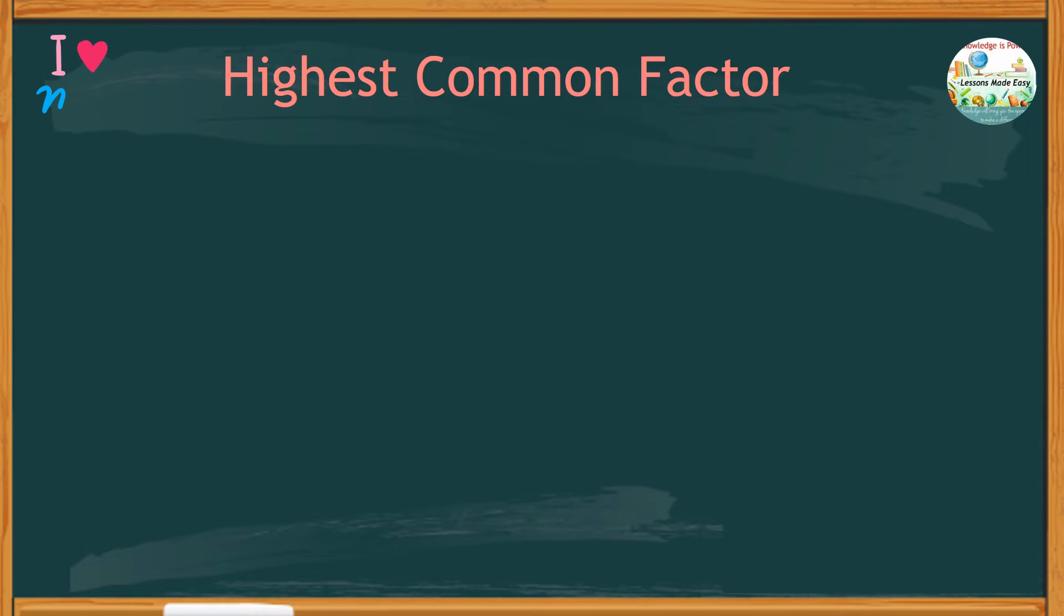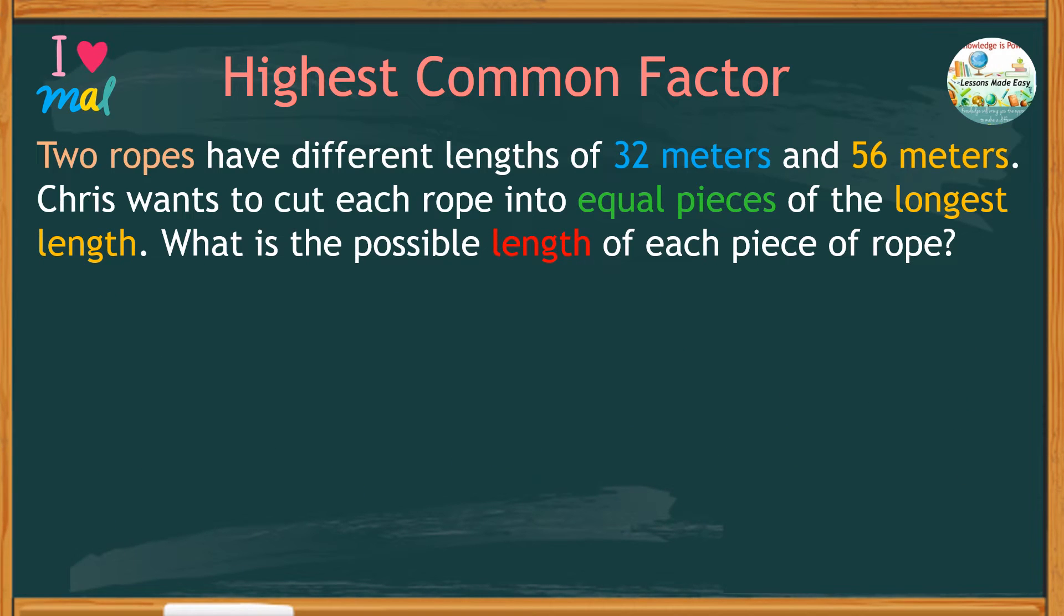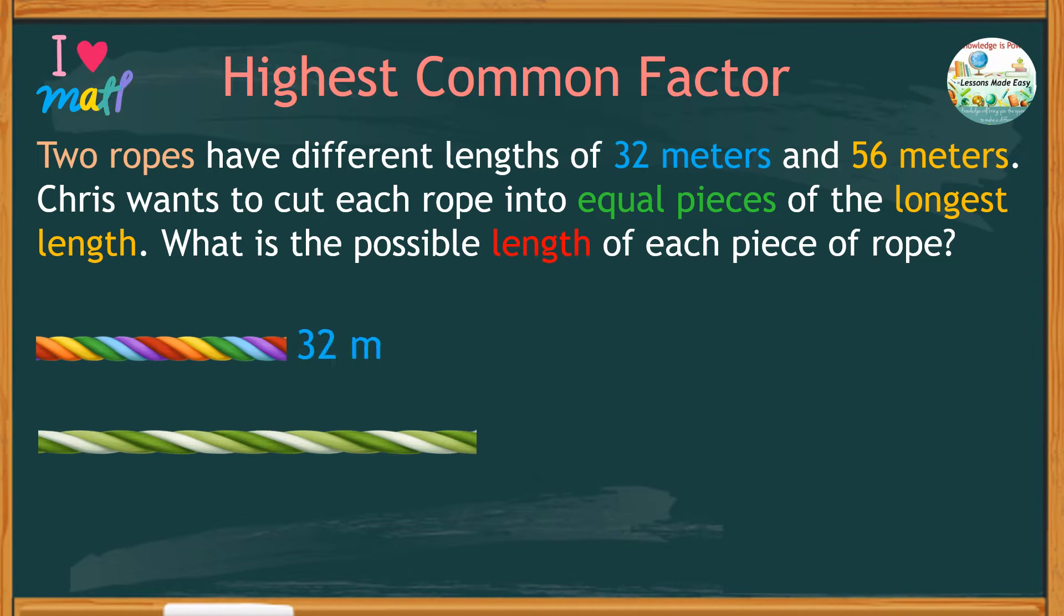Let's analyze this problem with an illustration. In the problem, the two ropes appear to be of different lengths. One is 32 meters long and the other is 56 meters long. To cut these ropes into equal pieces with the longest possible length, this means we have to find the highest common factor of 32 and 56.